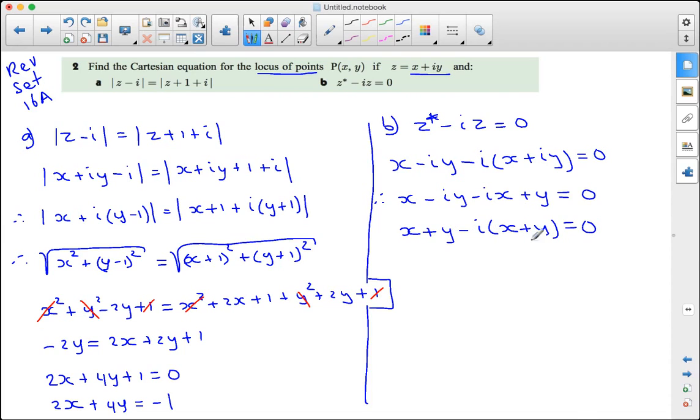Now, if all of this needs to be 0, that just means that x + y needs to be 0. So the real part needs to be 0. The imaginary part also needs to be 0, but the imaginary part is also x + y. So x + y equals 0. If we rewrite that, you get y equals -x, which again is a straight line, and that straight line is the locus of points.